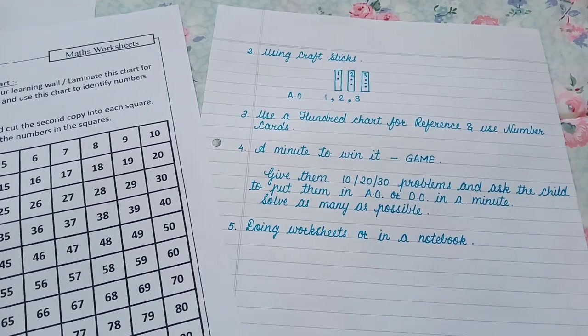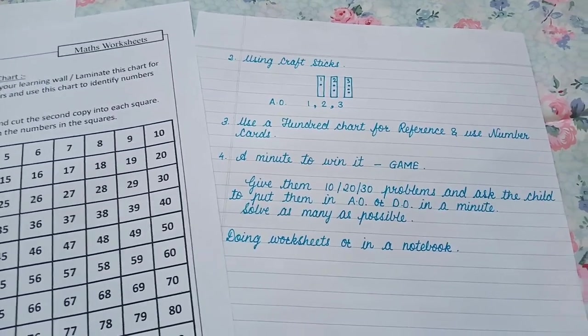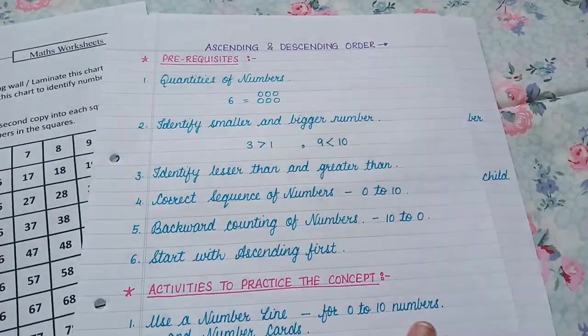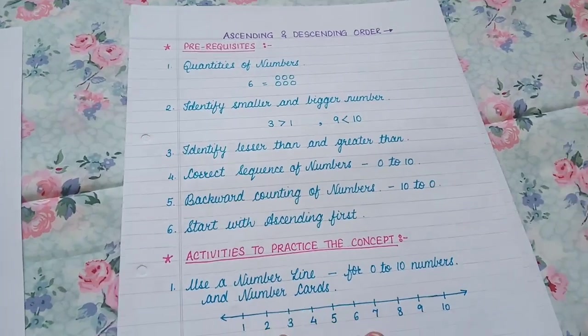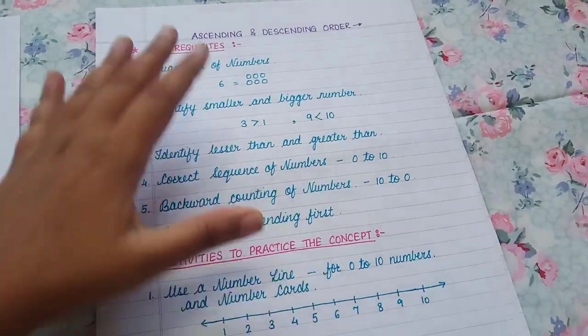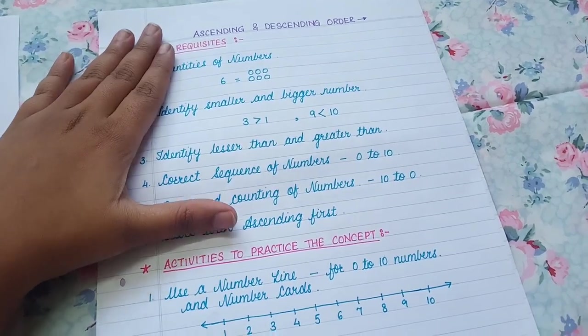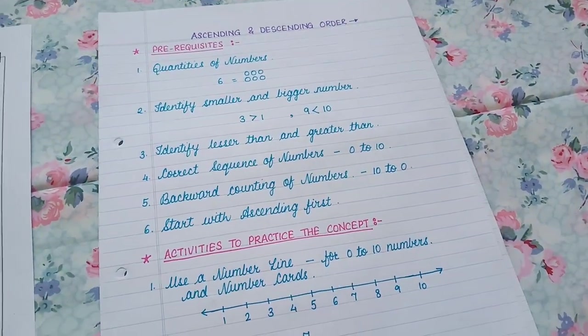So that's it guys. These are the four, five ways in which you can teach ascending and descending order to the child. Make sure that you fill the prerequisites first and then start with this concept.